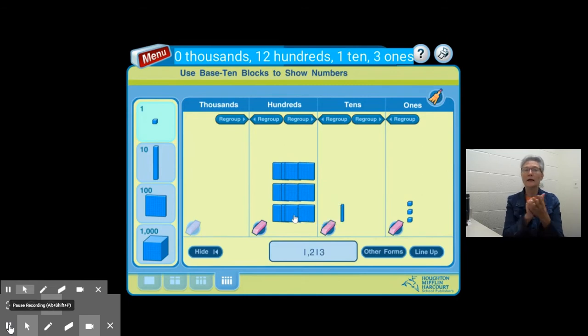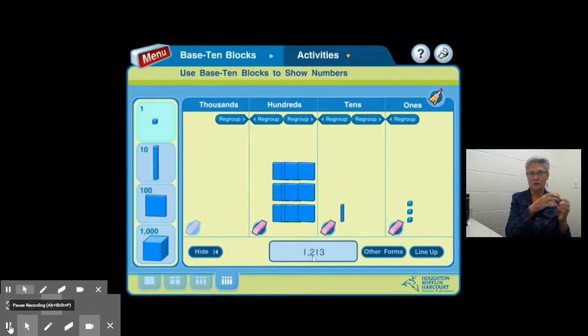Those are the 10 that we just got by regrouping the thousands. Plus I have two more hundreds that were already in our hundreds place value. So I have a total of 12 hundreds. Ten of them were from the thousands regroup and then I had two that were already in the hundreds place.